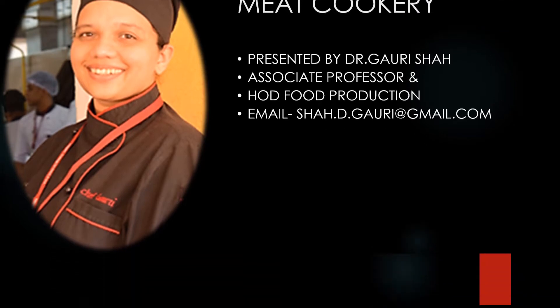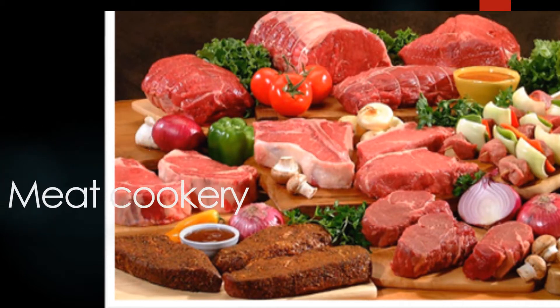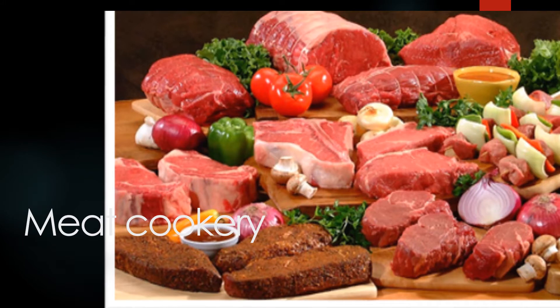Let's understand meat. Before we begin, let's discuss what are the objectives which we are going to cover in this topic. We need to understand what is meat, its classification, aging of meat, rigor mortis, slaughtering processes, meat structure and consumption. Then we will learn different meats, its cuts, fabricated cuts, primal cuts, its usage in cooking methods and different cooking methods applied to different types. Let's begin.